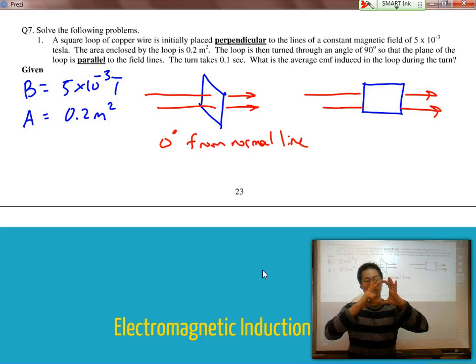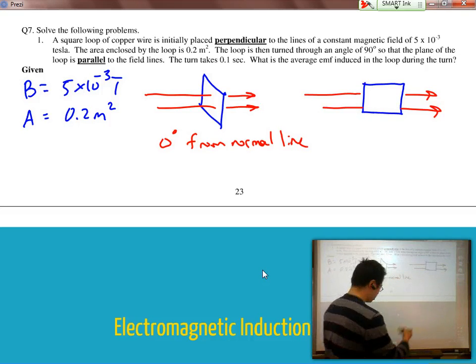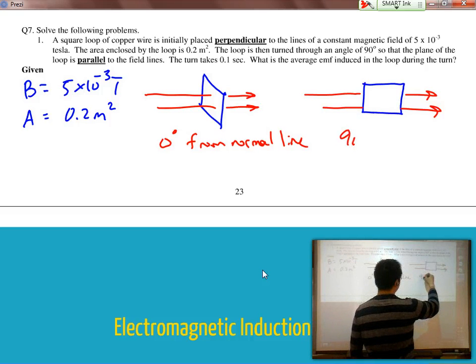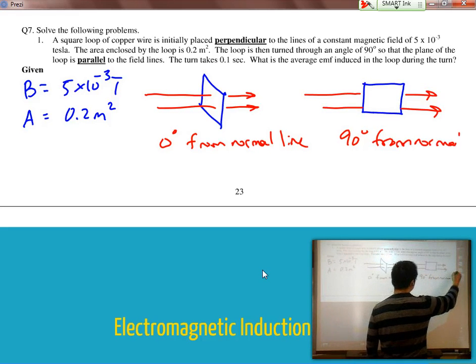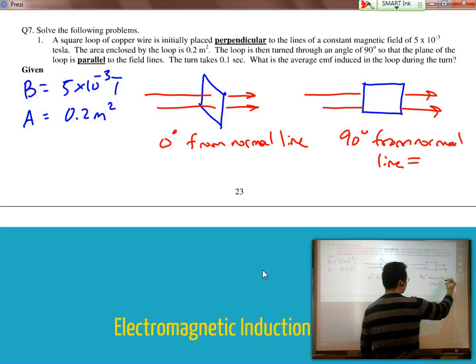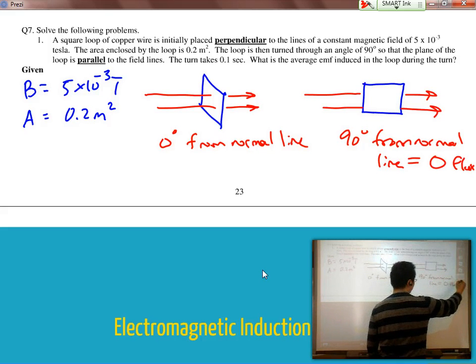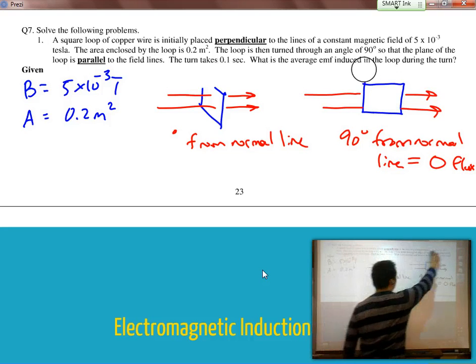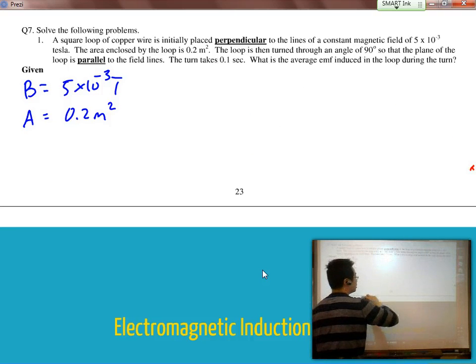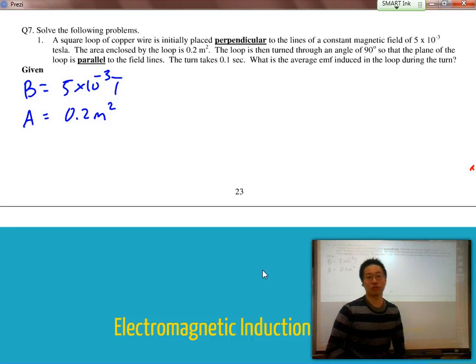They just pass parallel to the loop. If this is the loop over here, they're passing parallel without passing through. So in this case, this would be 90 degrees from the normal line, which would equal to 0 flux. So we can see that overall, when we're talking about our change in flux, it's changing from a certain maximum amount to 0.